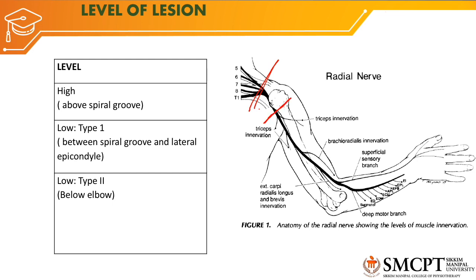If the injury is around the surgical neck, the supply to triceps, brachioradialis, sensory branch, and the deep motor branch will all be involved. If injury is below the spiral groove but above the lateral epicondyle, brachioradialis, the sensory branch, and deep motor branch are involved. In low type 2 — below the elbow — either the deep branch or the superficial sensory branch is involved, while brachioradialis and triceps remain innervated. The level of radial nerve injury is important for planning the rehabilitation program.